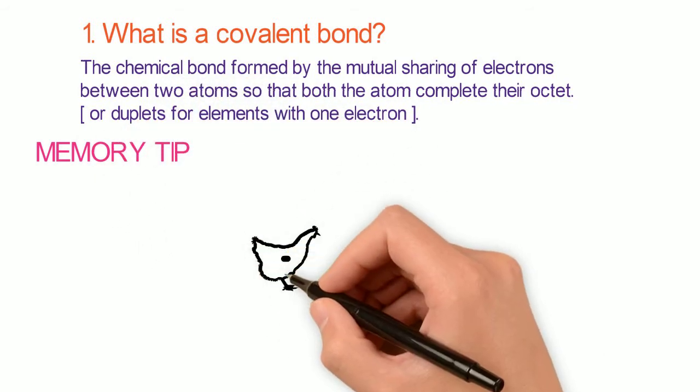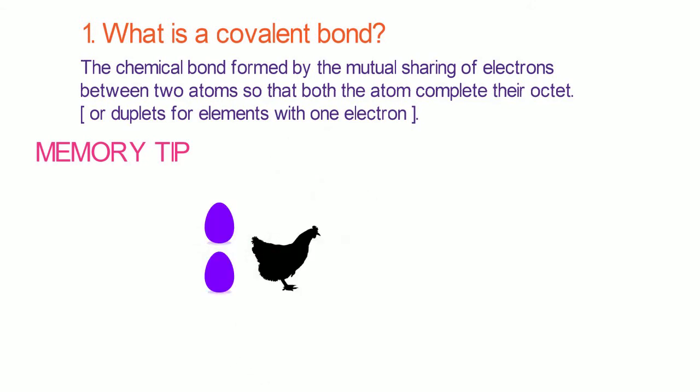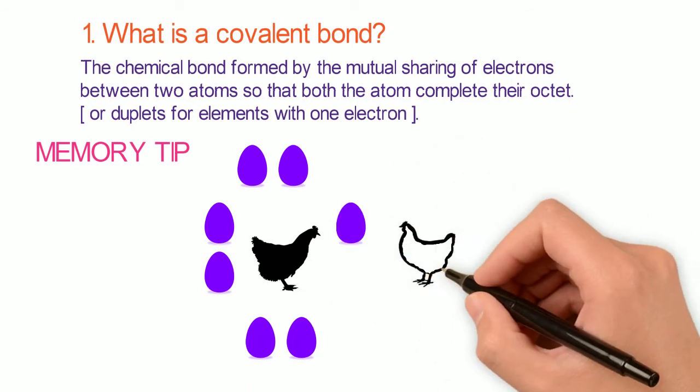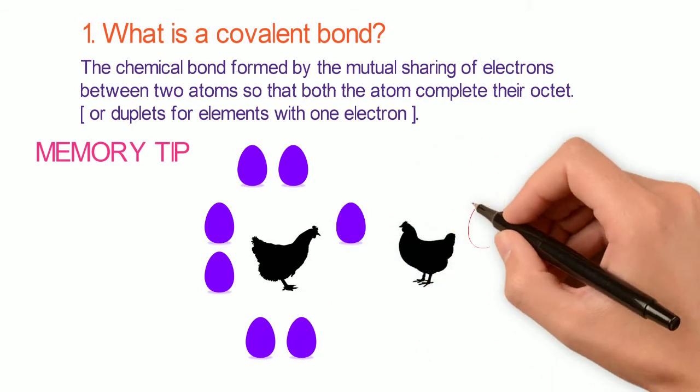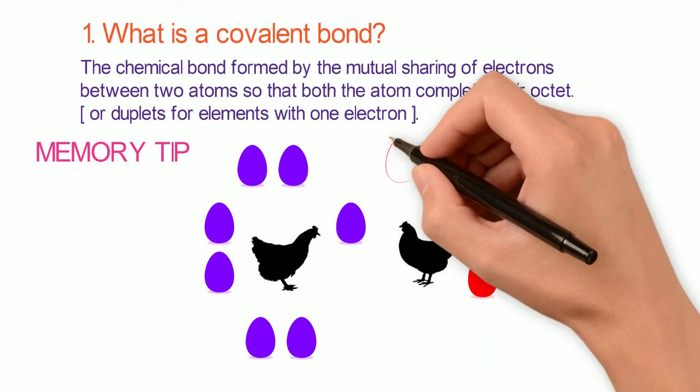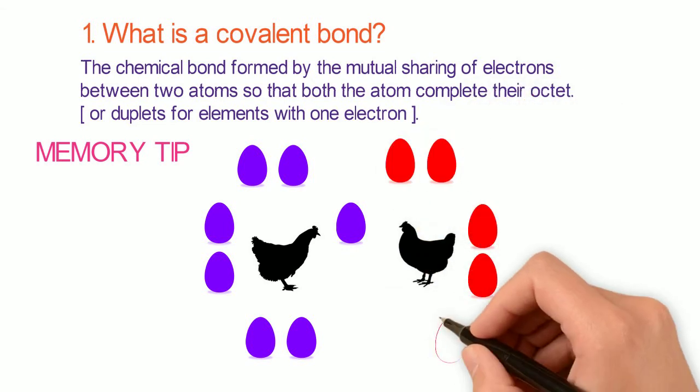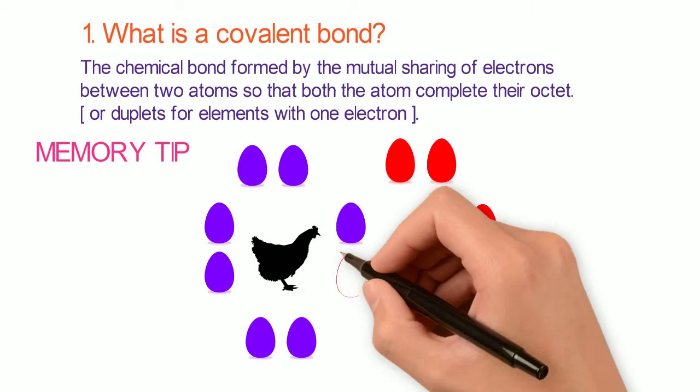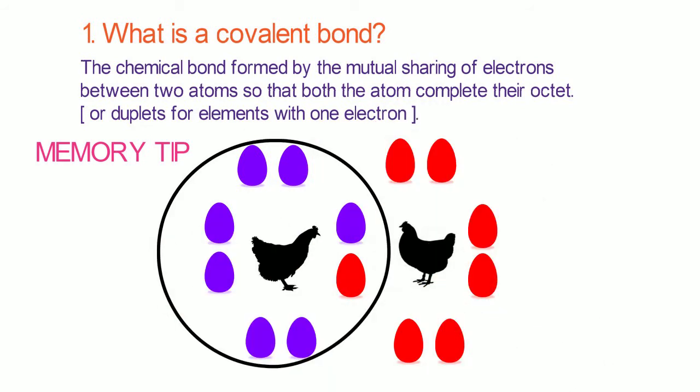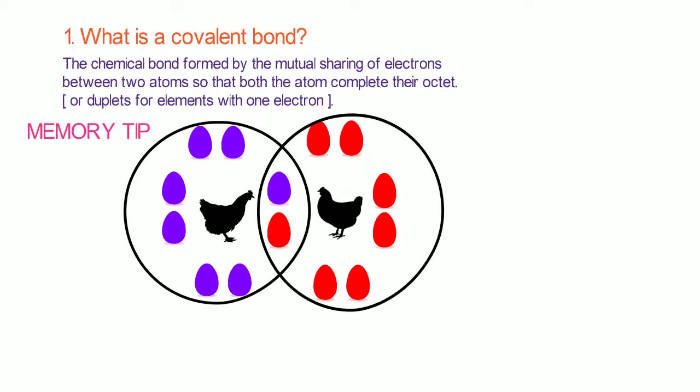Hen A has 7 eggs, but it likes to have 8 eggs to be happy. Similarly, Hen B also has 7 eggs and also loves to have 8 eggs to be happy. Therefore, they decide to share 1 egg each, so that both of them can have 8 eggs.